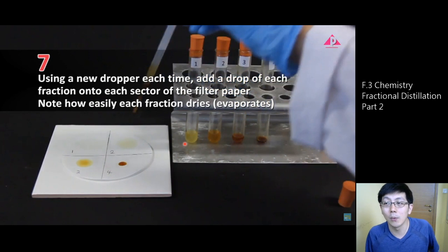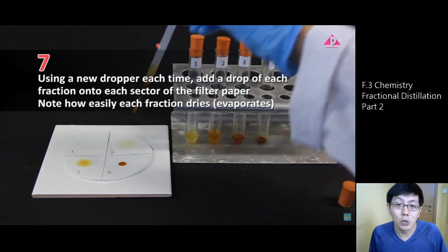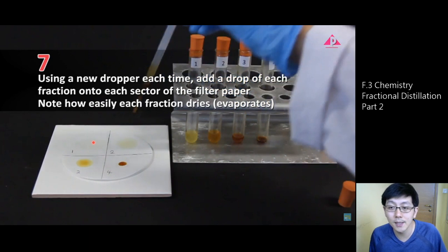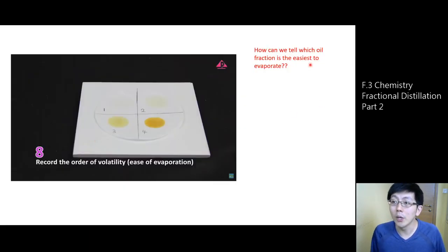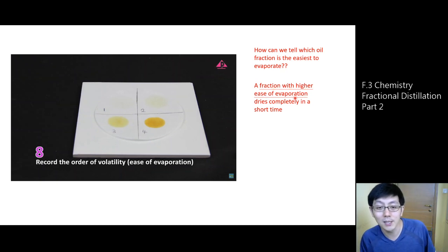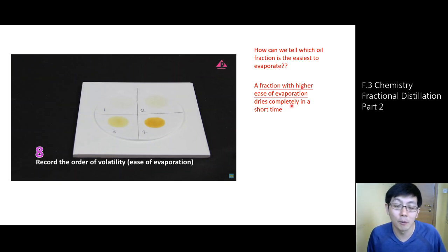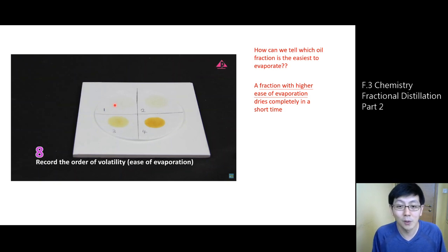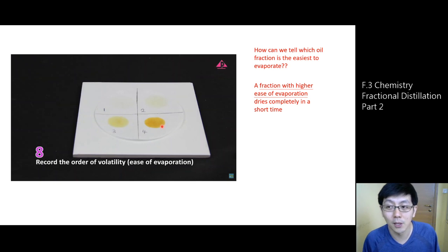Back to our experiment: how can we compare the ease of evaporation? We use a dropper to place these four oil fractions on a filter paper and observe the marks they leave. If a fraction has high ease of evaporation, it dries completely in a shorter period of time. You can see fraction 1 has nearly disappeared after the same period. Fraction 2 shows some yellow marks. Fractions 3 and 4 leave traces that last for a long period of time.